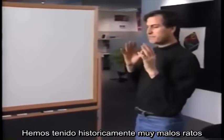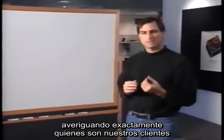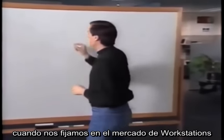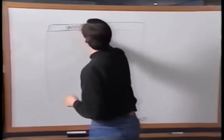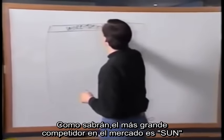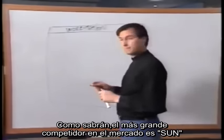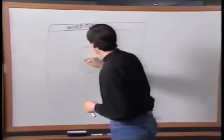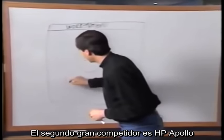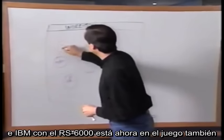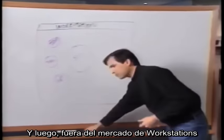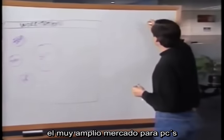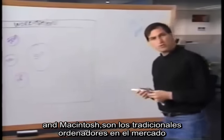We've had historically a very hard time figuring out exactly who our customer was, and I'd like to show you why. When we first look at the workstation marketplace, it looks something like this. The biggest player in the workstation marketplace is Sun. Second biggest player is HP Apollo. Third biggest player is DEC, and IBM with the RS6000 is now in the game as well. And then, outside the workstation marketplace, there's the very large market for PCs and Macintoshes — the traditional personal computer market.